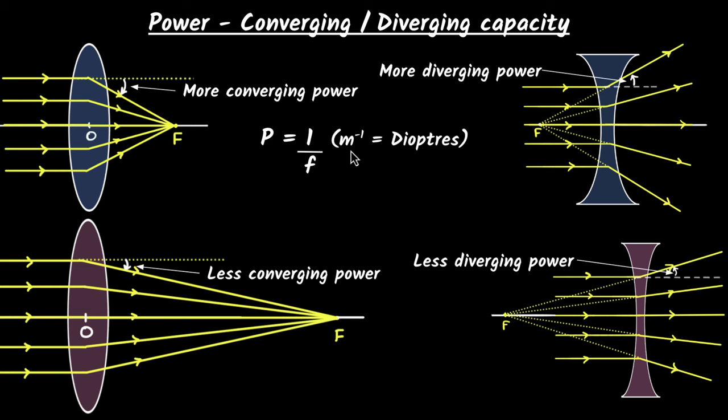That's how mathematically we define it. And what will be the unit of it? Well, since focal length has a unit of meter, one over focal length becomes meter inverse. And meter inverse in optics for power, we call it diopters. So that's the standard unit for power.